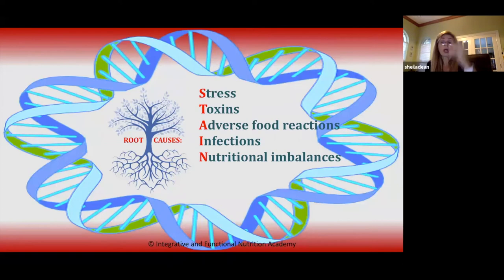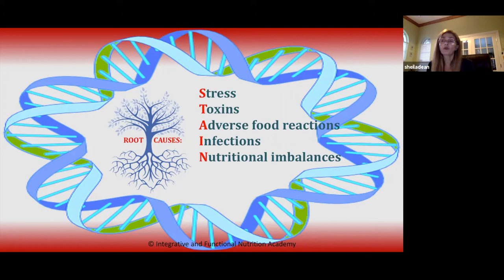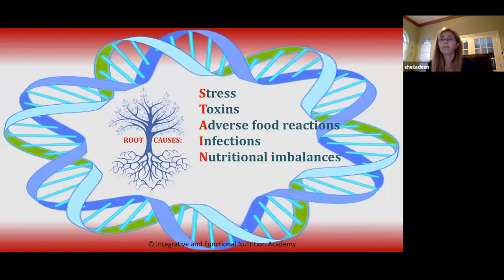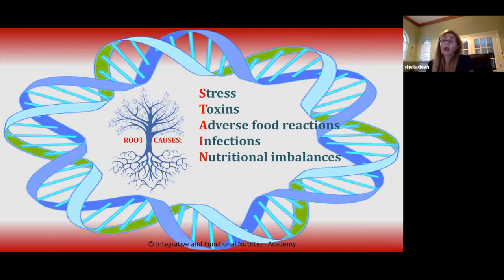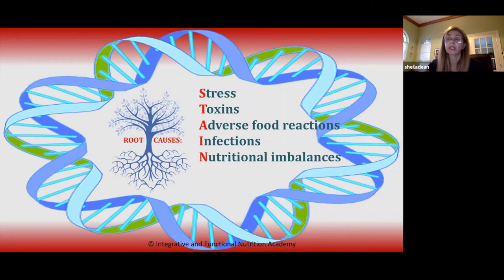I is for infections — bacterial, parasitic, fungal, and viral. N is for nutritional imbalances — not just a poor diet, but also drug-induced nutrition imbalances, or a nutritional imbalance due to a SNP, a single nucleotide polymorphism referring to a genetic variant, sometimes called a mutation. Two people can present with very similar GI symptoms — for one, it's simply a poor diet needing cleanup; for another, there's a subclinical infection requiring labs to uncover. This is why we need to identify these root causes.